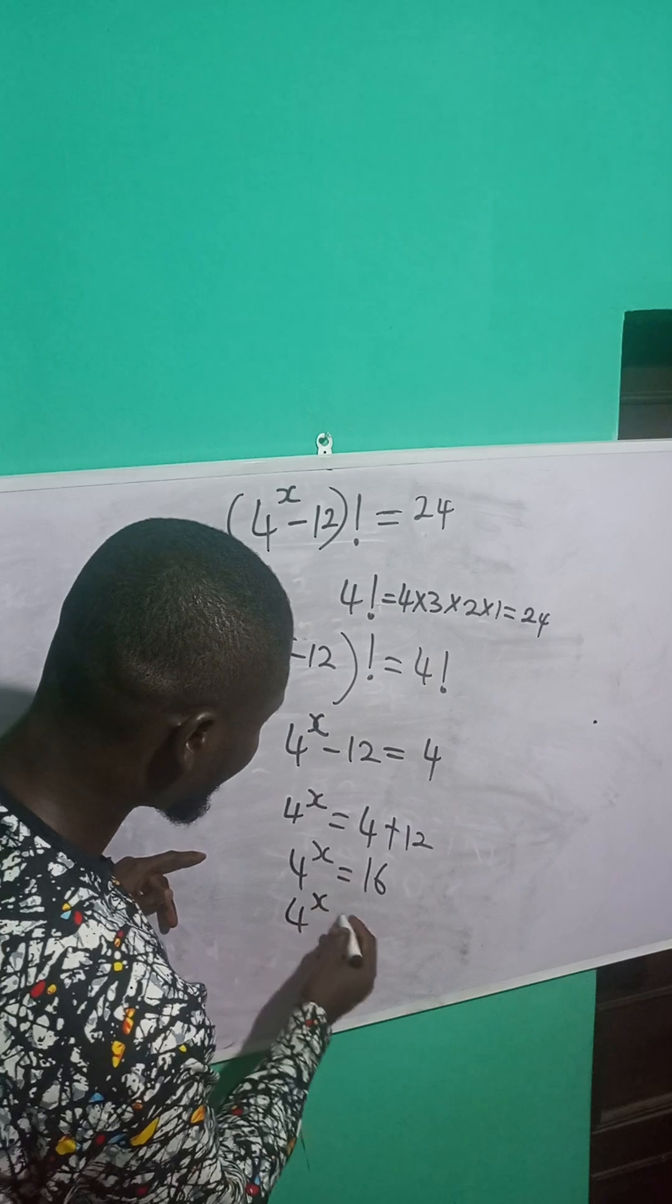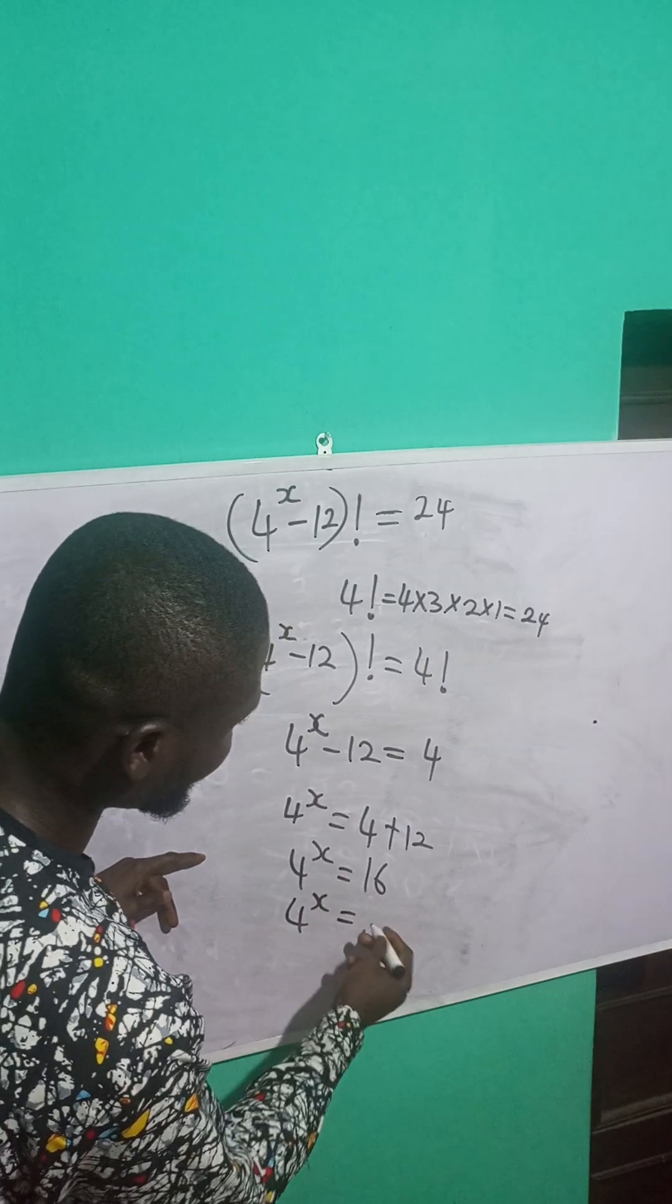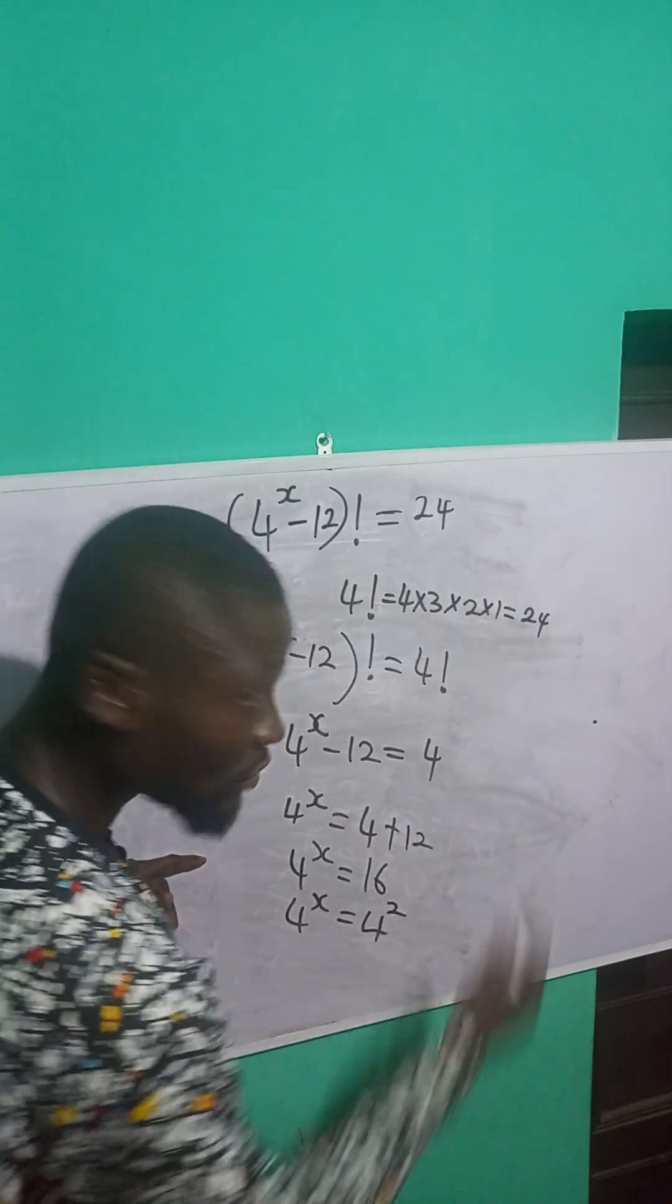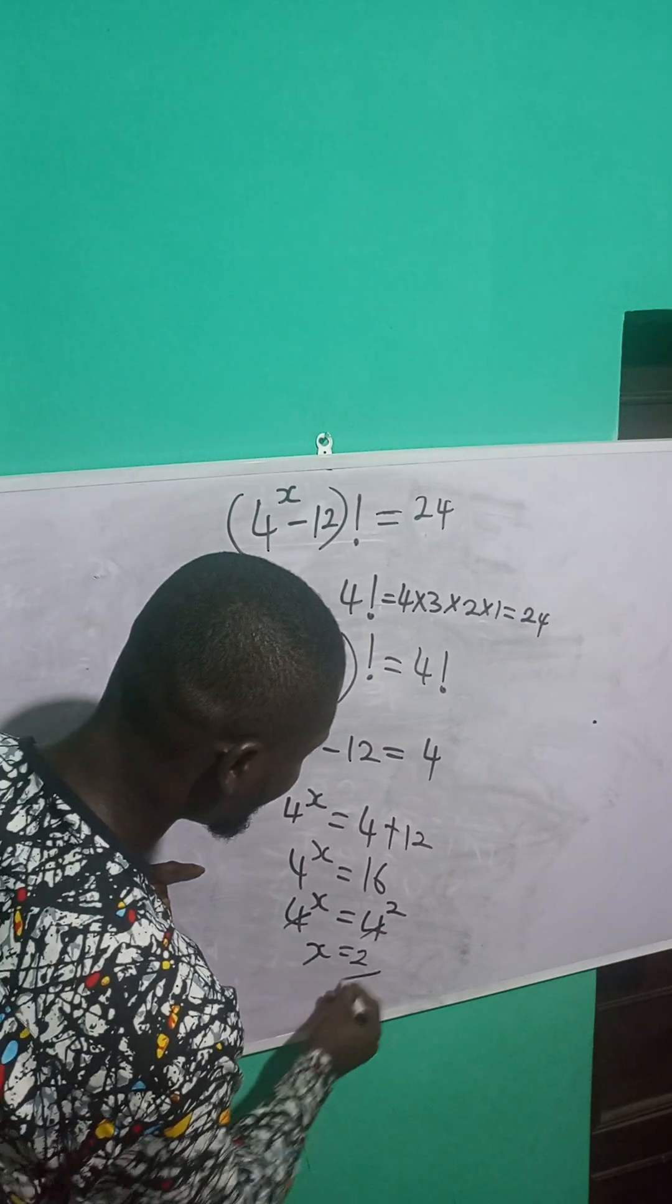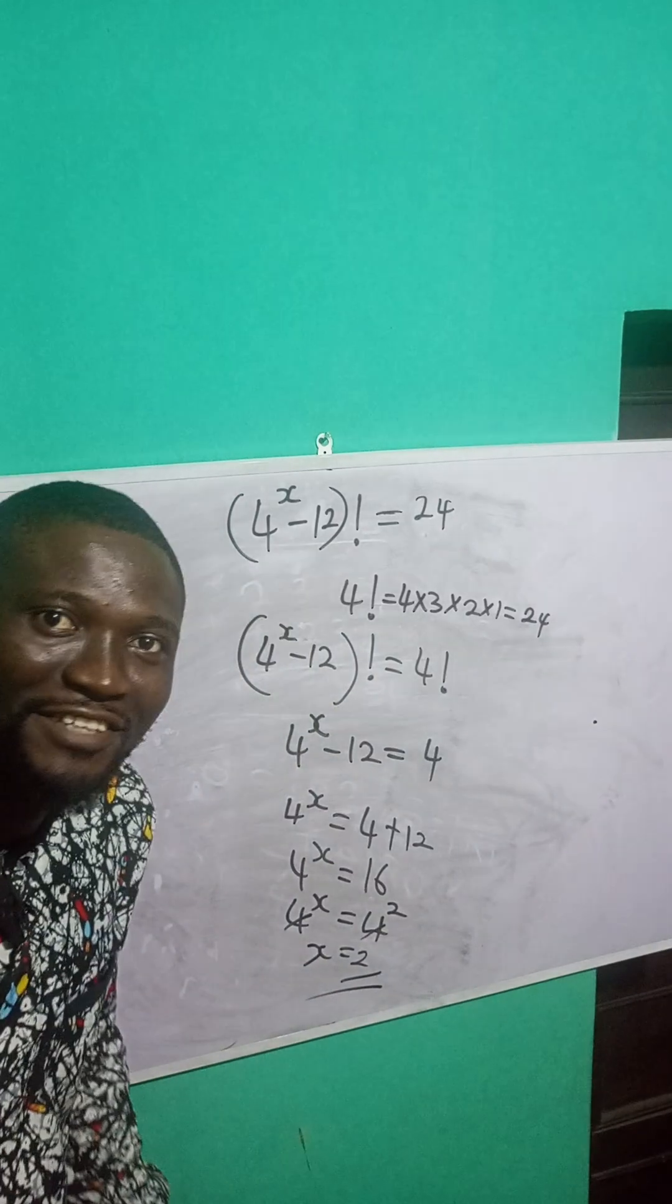So 4 raised to power x is equal to... I need to make 16 to have a base of 4. So 4 raised to power 2. The same basis, I will equate the exponent. So x is what? 2. I'll see you in the next video.